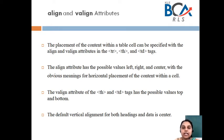The valign attribute of the table header and table data tag has the possible values as top and bottom, and the default vertical alignment for both headings and data is going to be center. So now we will see one example and try to understand how we are going to use align and valign attributes in our tables.